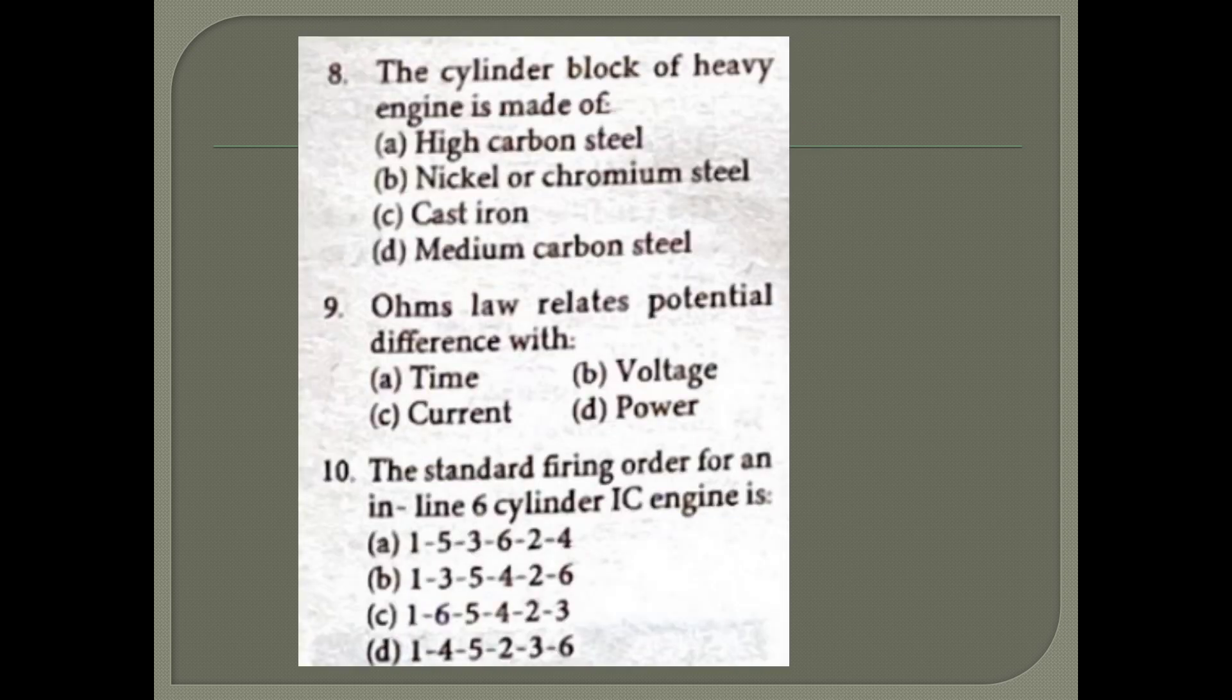Eighth question: The cylinder block of heavy engine is made of high carbon steel, nickel, chromium steel, cast iron, or medium carbon steel. The cylinder block of heavy engine is made of cast iron.